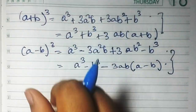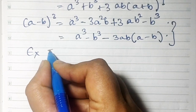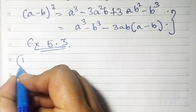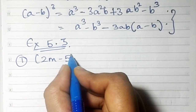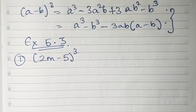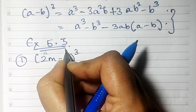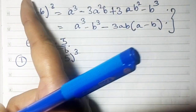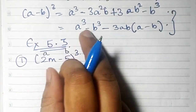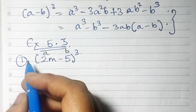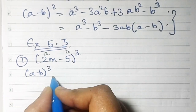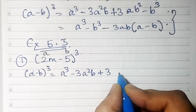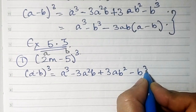Let's begin with Exercise 5.3. The first sum says (2m - 5)³. Over here our a is 2m and our b is 5. Let's write the formula first — it's a minus b, so the formula is (a-b)³ = a³ - 3a²b + 3ab² - b³.